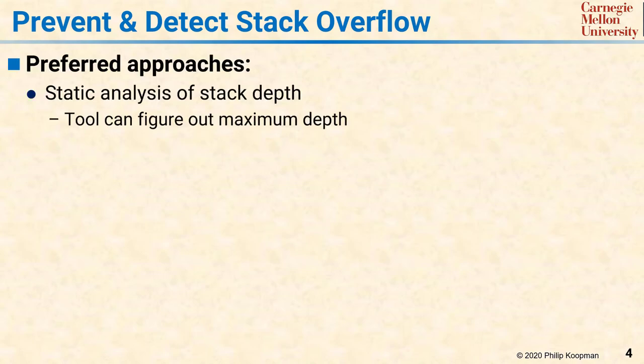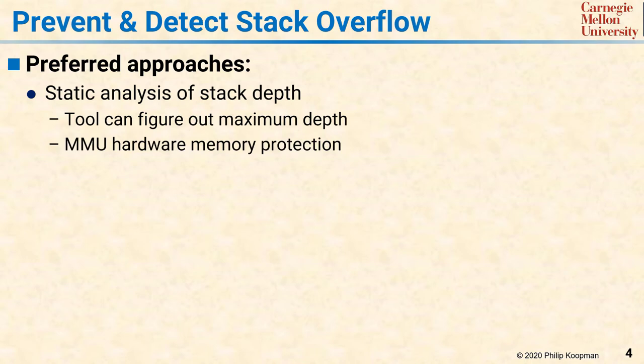There are several ways to prevent and detect Stack Overflow. The best way to prevent it is to analyze the maximum possible stack depth for your system to prove that Stack Overflow can never happen. To do this, use a tool that analyzes the maximum possible stack depth. Make sure that the tool can account for the worst-case nesting of operating system calls and interrupt service routines in its analysis. In addition, it is helpful to use a memory management unit, or MMU, to provide hardware-based memory protection.